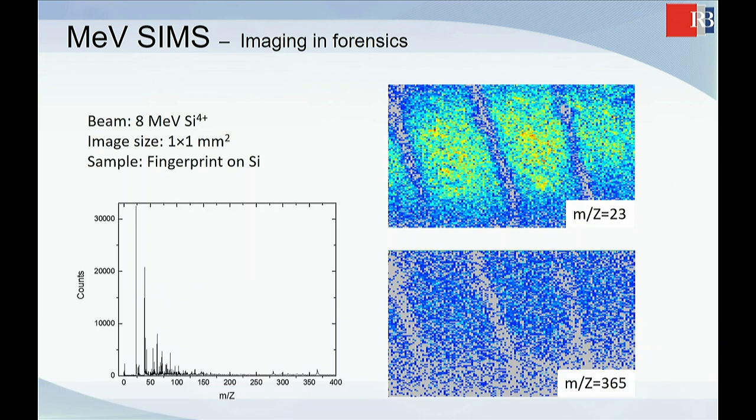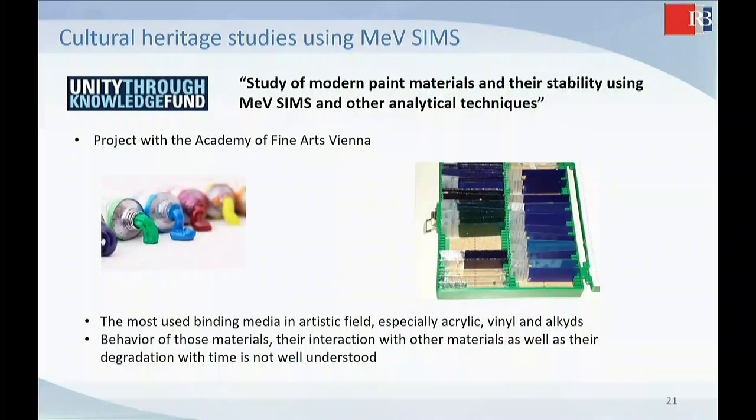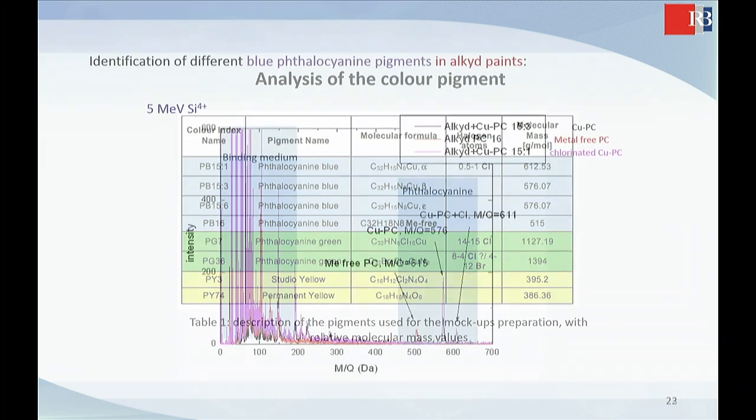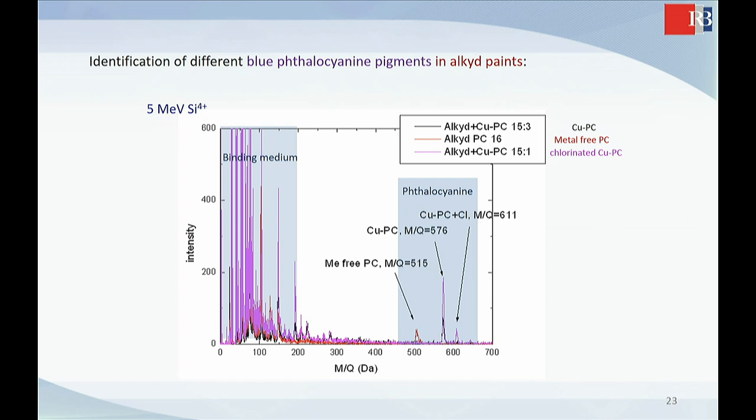And then we did a lot of different examples. This is like a fingerprint. And you can get a lot of different peaks. The problem with the MeV SIMS is how to identify all this zoo of so many different peaks, which is very difficult to interpret. But there are some possibilities. So this is one project that we were doing two or three years ago.